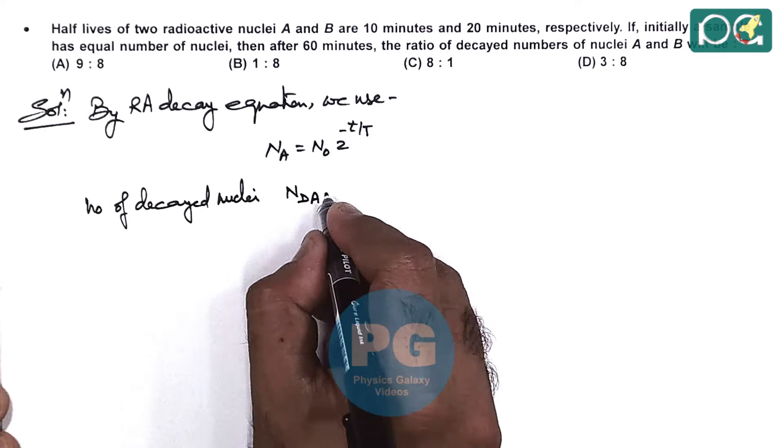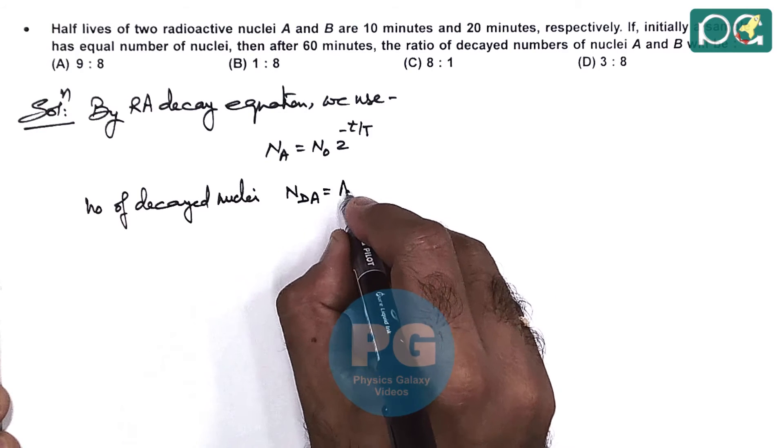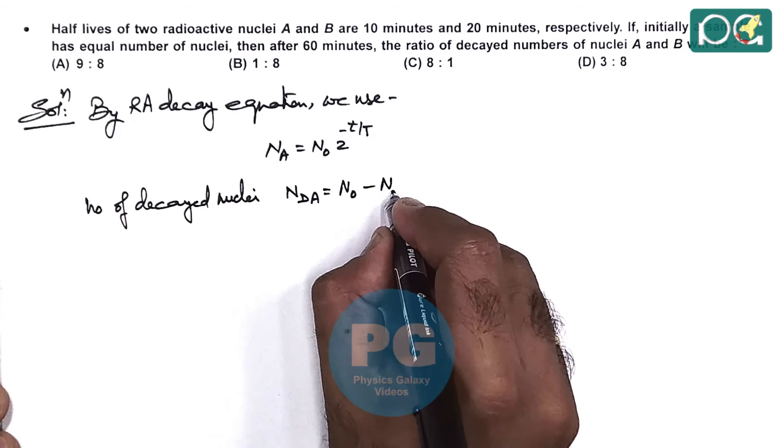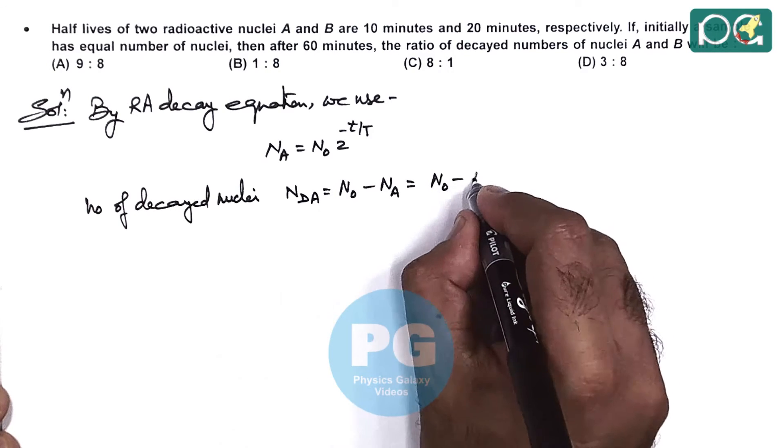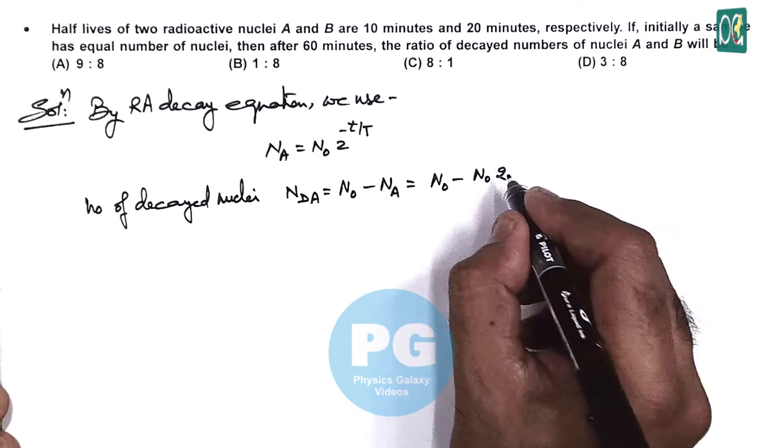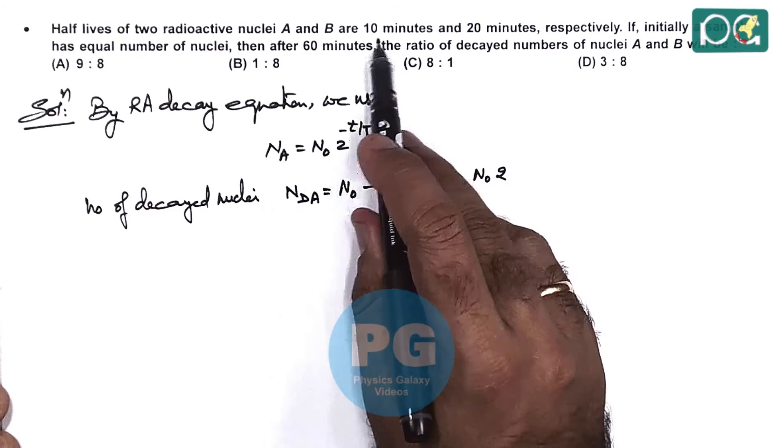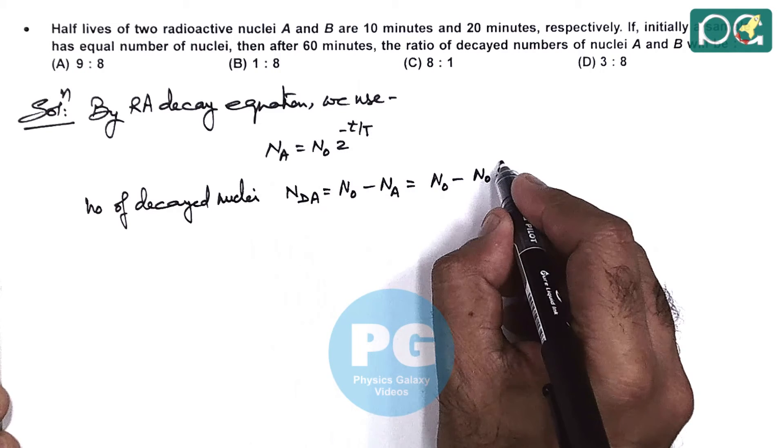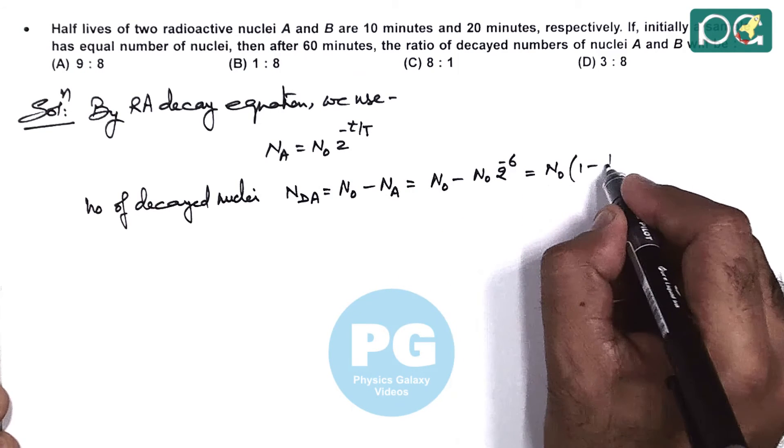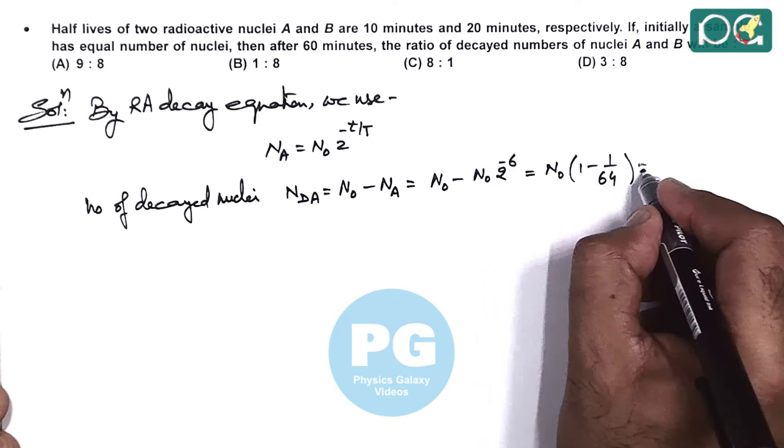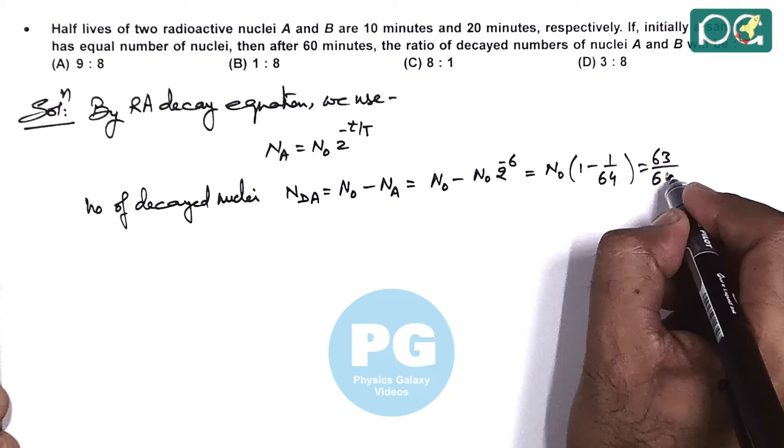Number of decayed nuclei of A we can write as N0 minus NA. So if we put the value, this is N0 minus N0 times 2 to the power, here Ta is 10 minutes and total time T is 60 minutes, so 2 to the power minus 6, which is N0 times (1 minus 1 by 64), that gives 63 by 64 N0.